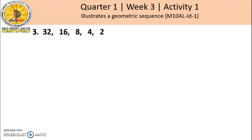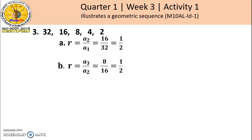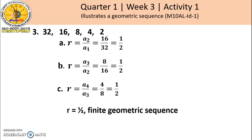Example number 3: the sequence 32, 16, 8, 4, 2. Find the common ratio: A sub 2 divided by A sub 1 is 16 divided by 32, or 1/2. A sub 3 divided by A sub 2 is 8 divided by 16, or 1/2. A sub 4 divided by A sub 3 is 4 divided by 8, or 1/2. The common ratio is 1/2, and it is an example of a finite geometric sequence.